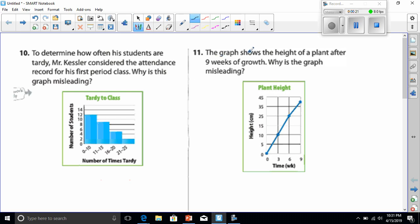Number 11 is mine to do. It says, the graph shows the height of a plant after nine weeks of growth. Why is the graph misleading? Well, let's look at the graph to make sure that what we're looking at has equal intervals. Zero to three is three weeks, and three to six is three weeks, and six to nine is three weeks. So my horizontal plane, my x-axis, seems okay.